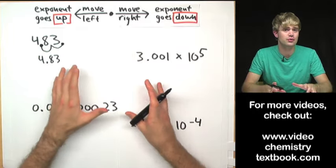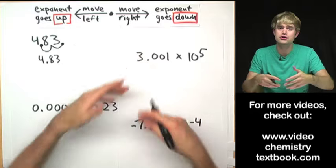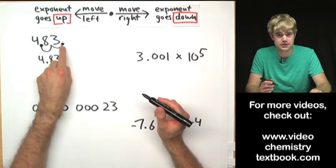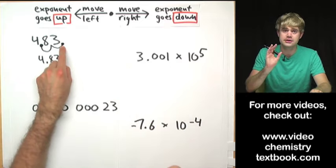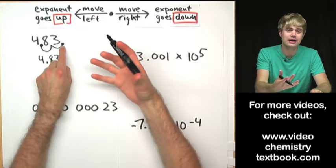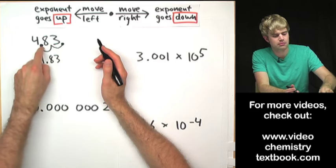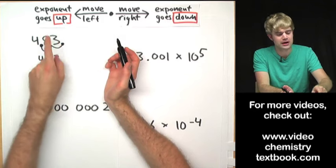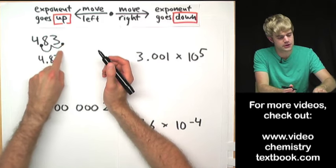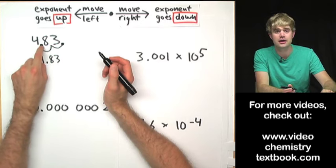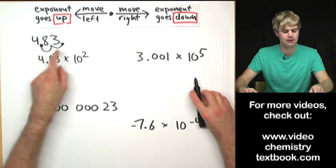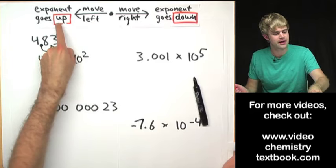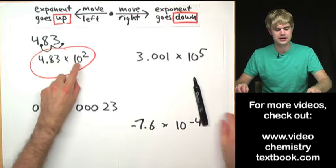So I'm going to move the decimal place over two spots so that I have just the 4 to the left of it and everything else on the other side. I could rewrite this number as 4.83. The other half in scientific notation is we have 10 with an exponent. Starting with the decimal here at 10 to the zero, moving left raises the exponent — one spot is 10 to the first, another spot is 10 to the second. So the answer is 4.83 times 10 to the second.